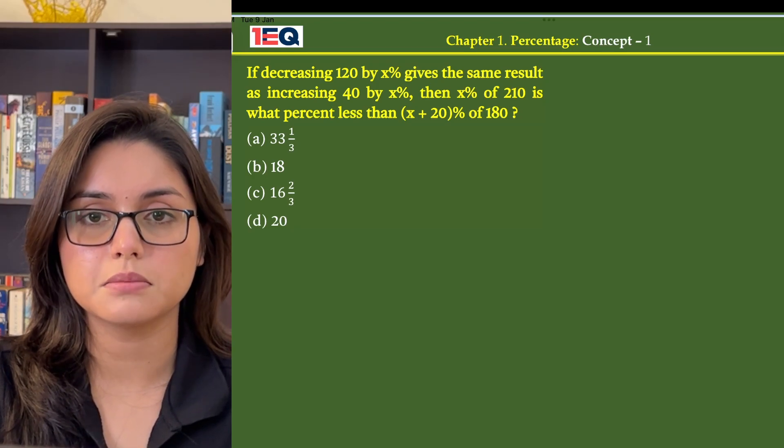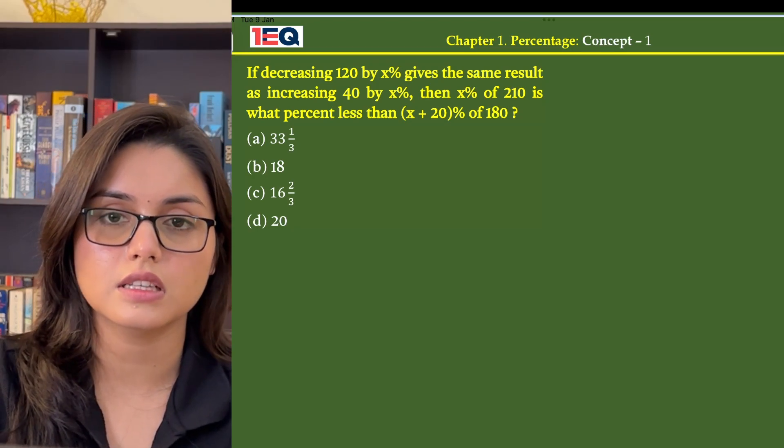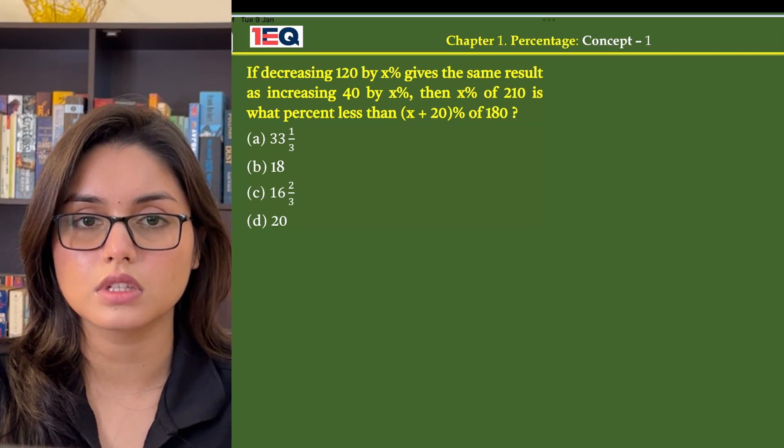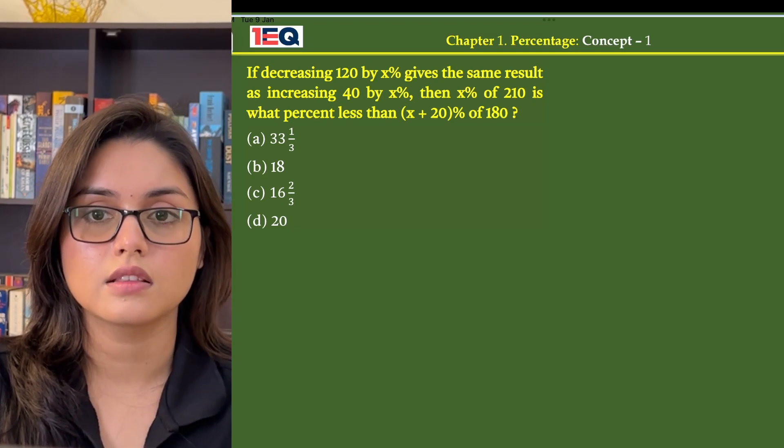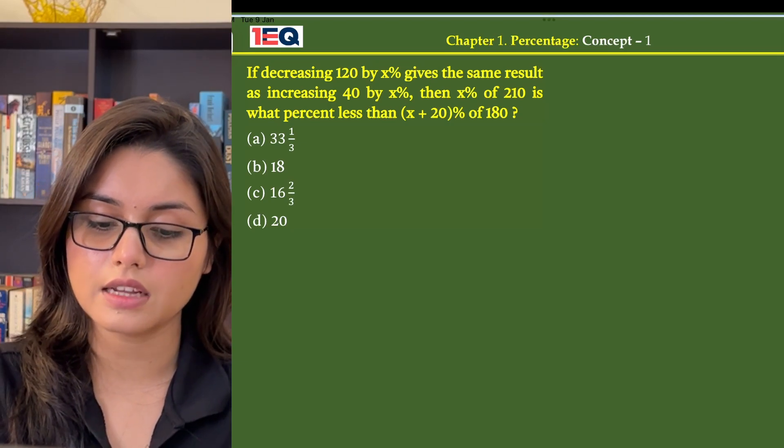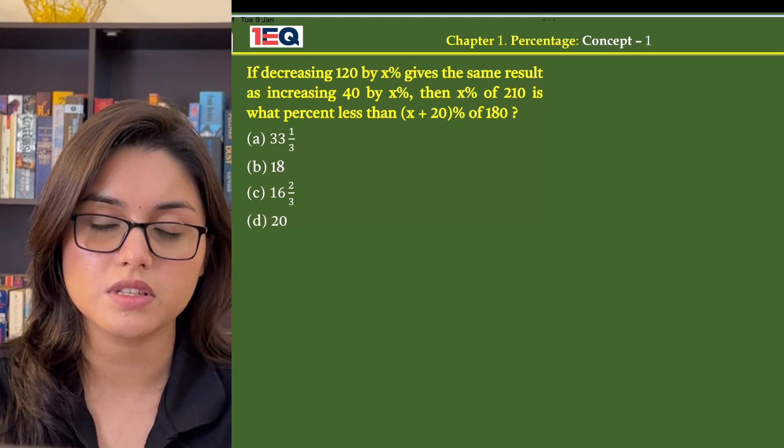If decreasing 120 by x percent gives the same result as increasing 40 by x percent, then x percent of 210 is what percent less than (x+20) percent of 180? Considering 120 and 40 are 100 percent of themselves,